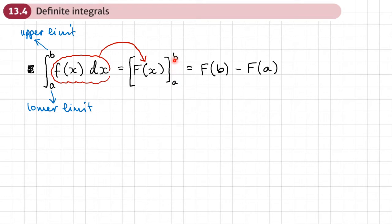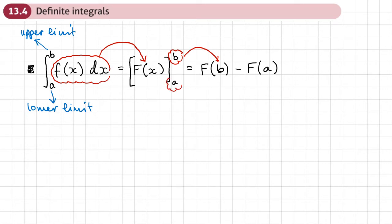What we then do with those numbers is substitute each of them in turn into the integrated function. Once we've done that, we do a subtraction. We substitute the upper limit into the integrated function and get a number, then substitute the lower limit and get another value, and then do the first value minus the second. You end up with some sort of constant when you're finished.